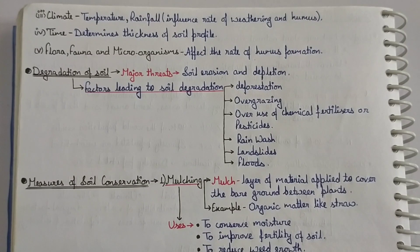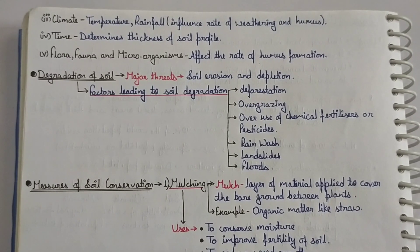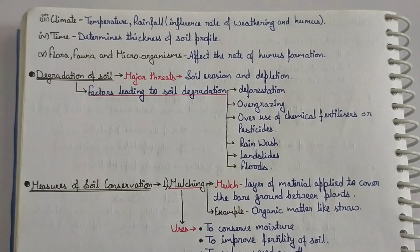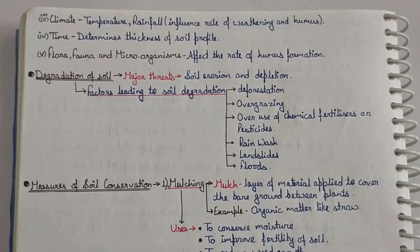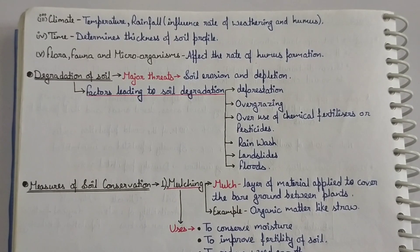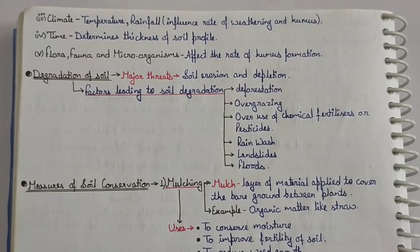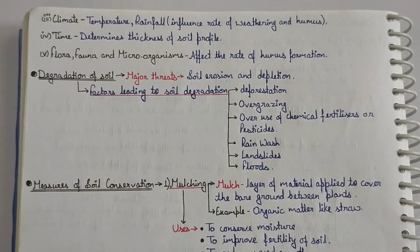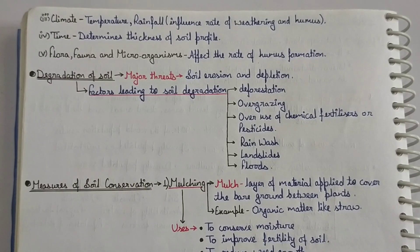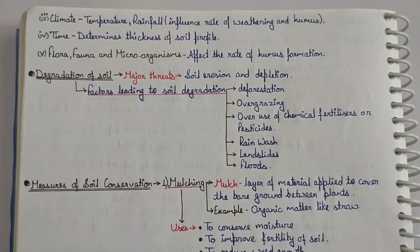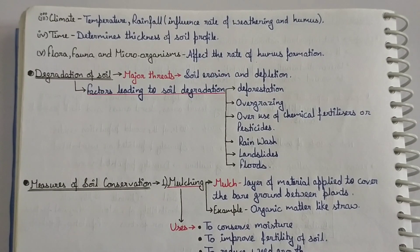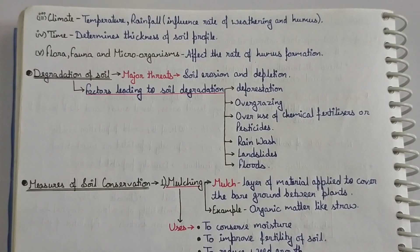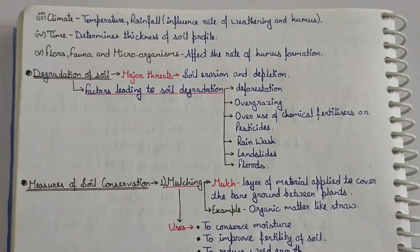Third, overuse of chemical fertilizers and pesticides. Additional causes include rain wash, landslides, and floods. So that's it for this video. In the next video I will complete this chapter. If you liked this video, don't forget to like and subscribe, and don't forget to comment. Thank you, see you.